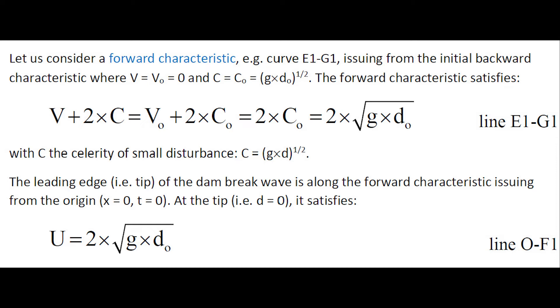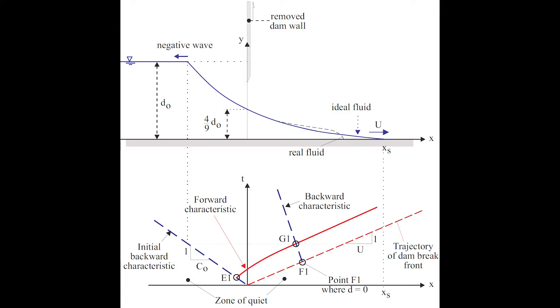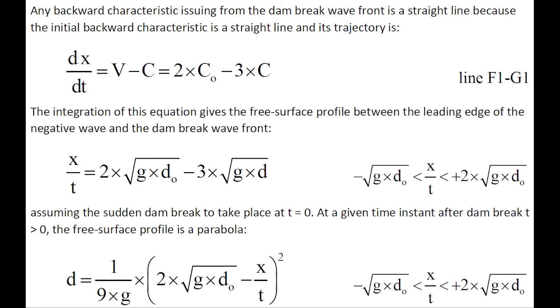The leading edge of the dam-break wave is along the forward characteristic issuing from the origin, x equals 0, t equals 0, and at the tip it satisfies u equal 2 times square root of G-D-not. That is, the celerity of the dam-break wave. An ideal solution is u equal 2 times C-not. Any backward characteristic issuing from the dam-break wave front is a straight line, because the initial backward characteristic is a straight line, with a trajectory dx over dt equals v minus c.